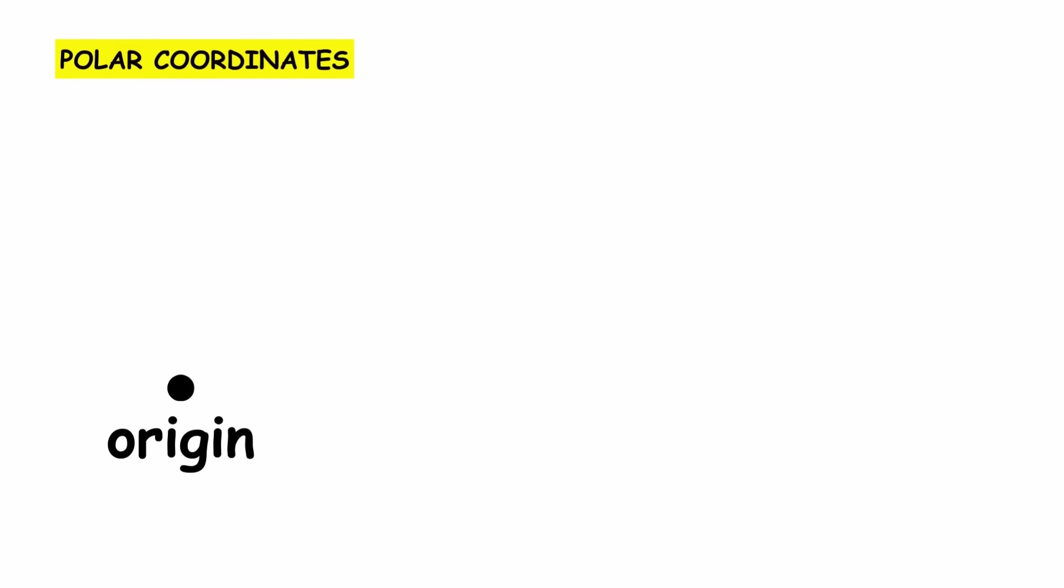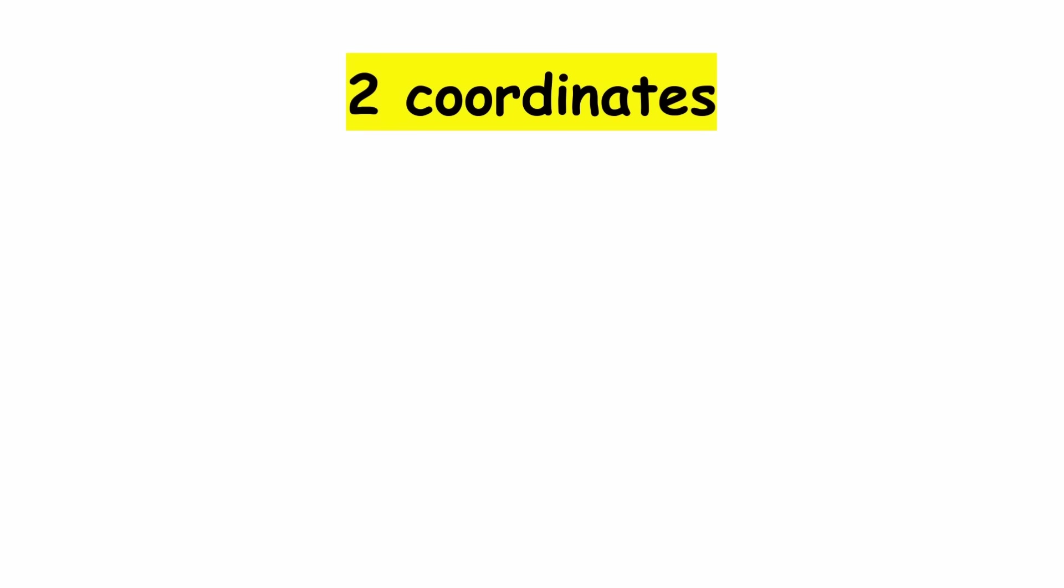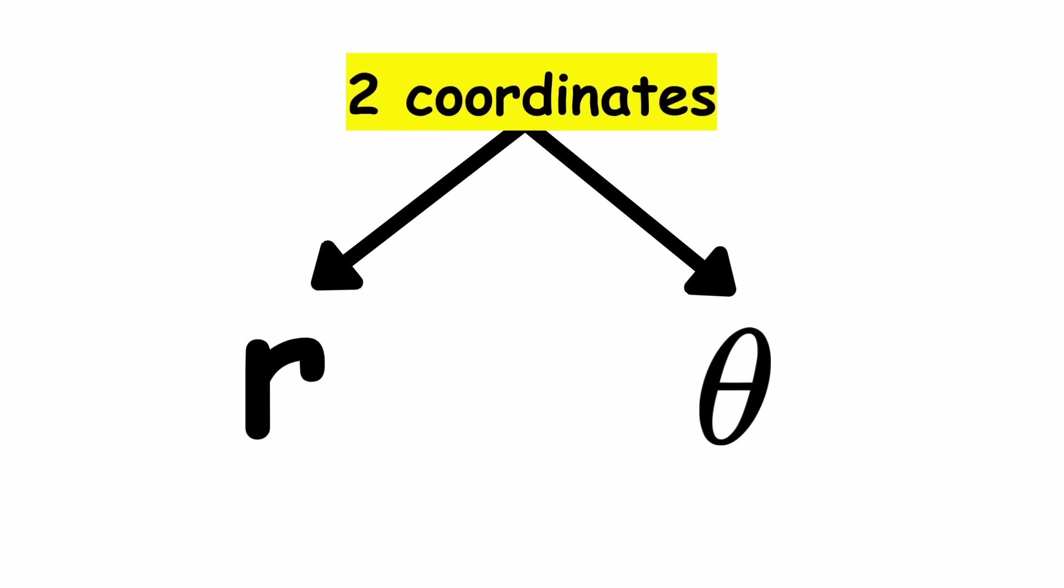Here's how it works. Starting from the origin, which is now called the pole, draw an infinite ray toward the right, called the polar axis. This system has two coordinates, r and theta.